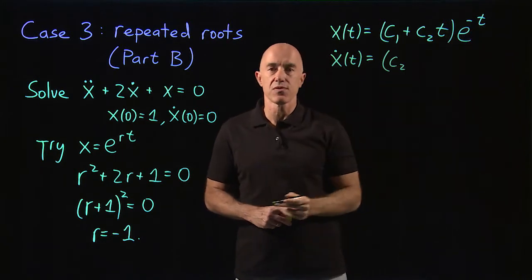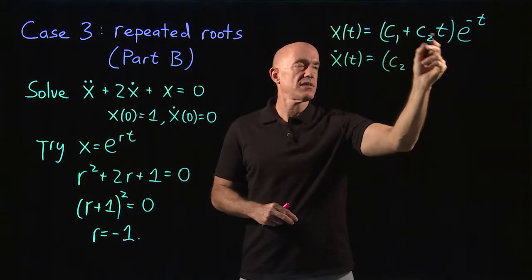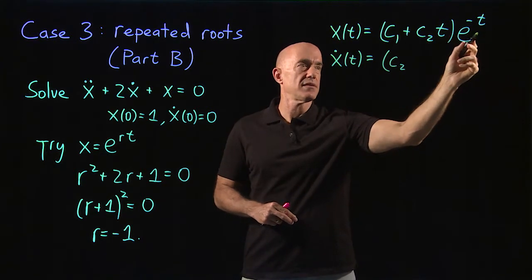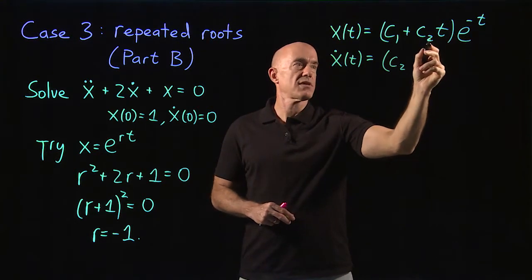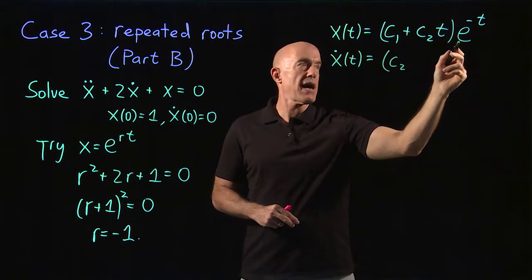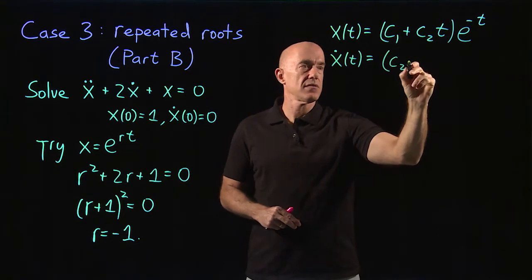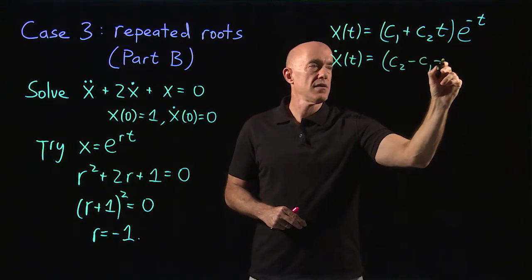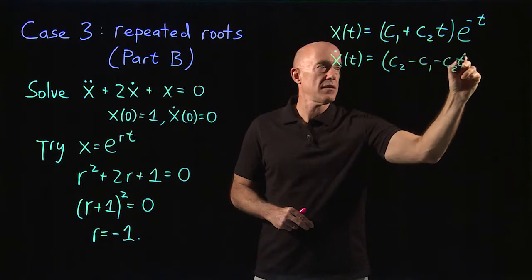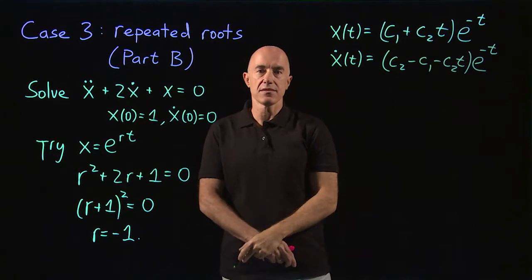All the terms will have an e to the minus t. So the derivative of the first is c2 times e to the minus t plus the first times the derivative of the second. The derivative of e to the minus t is minus e to the minus t, so we get a minus sign. Minus c1 minus c2t times e to the minus t. That's the derivative.